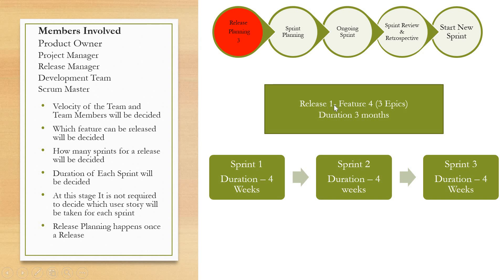For example, based on the velocity and capacity of the team, the team has decided to release feature four in release one. Feature four has three epics, release one would be after three months, and for release one they have decided to have three sprints with a duration of four weeks each. At this stage it is not required to decide which user story will be taken for each sprint — only how many sprints are required and which feature will be released first. Release planning happens once per release.